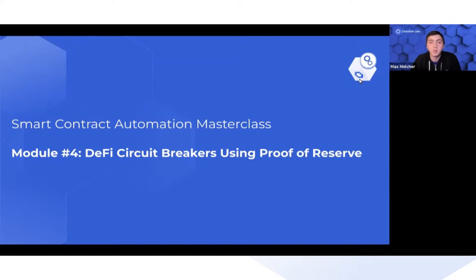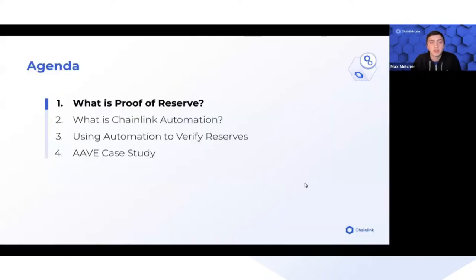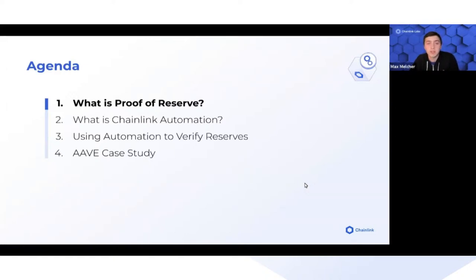Today we're going to walk through what proof of reserve is, what Chainlink Automation is, and how you can leverage Chainlink Automation to verify reserves. At the end of this talk we're going to be joined by Aave, and they're going to explain their use case for Chainlink Proof of Reserve and Chainlink Automation in production.